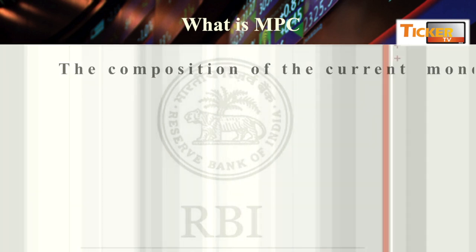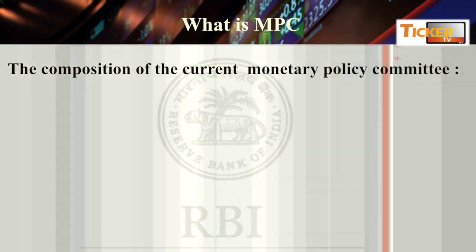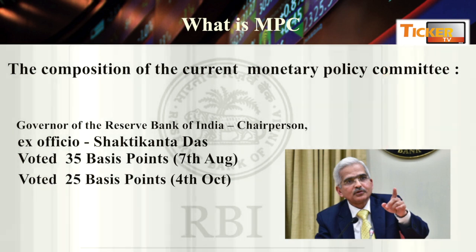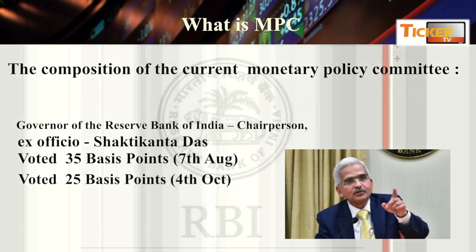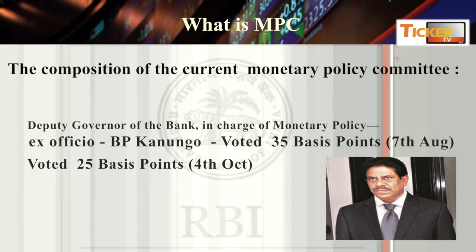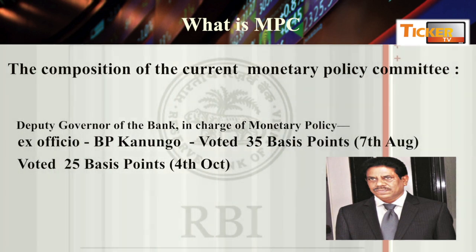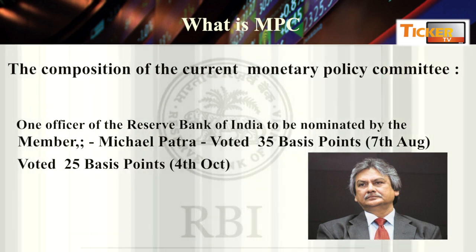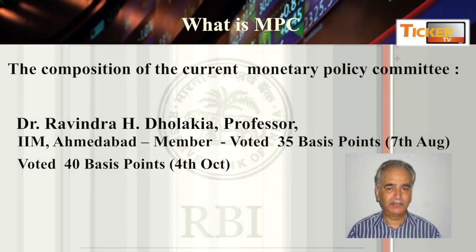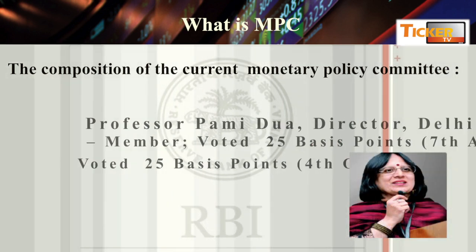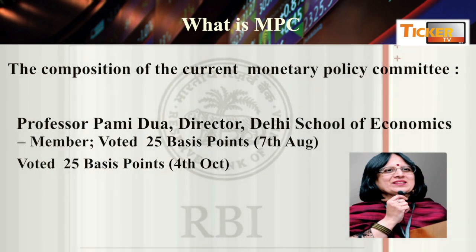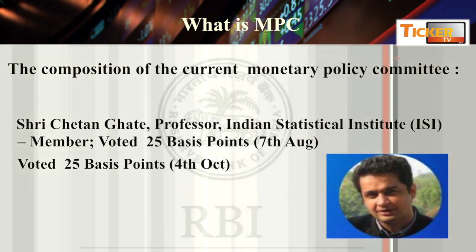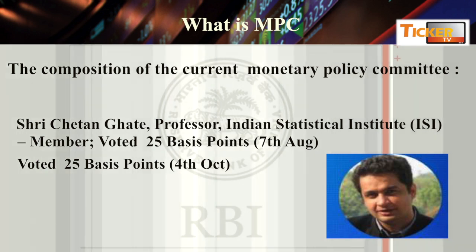Aaj ki policy mein, joh six members hain, unhone joh voting ki thi woh is prakar hai. Our governor, Mr. Shaktikanta Das, voted for 25 basis points. Our deputy governor, Mr. Kanungo, again 25 basis points. Mr. Michael Patra, 25 basis points. Mr. Dholakia, 40 basis points. Professor Pamidua, 25 basis points. And Shri Chetan Ghate, again 25 basis points. So joh majority aaya, outcome aya — woh humara 25 basis points ho gaya.